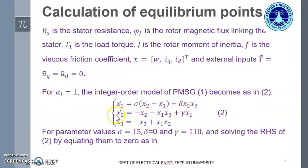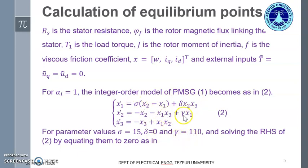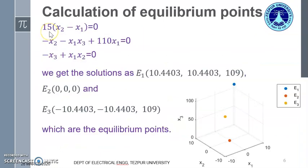So x1_dot, x2_dot, and x3_dot are now defined. There are three parameters: sigma, delta, and gamma. For the parameter values sigma = 15, delta = 0, and gamma = 110, since delta = 0 that term vanishes, leaving only sigma and gamma. Replacing sigma with 15 and gamma with 110, we solve the right-hand side of these equations by equating them to zero.